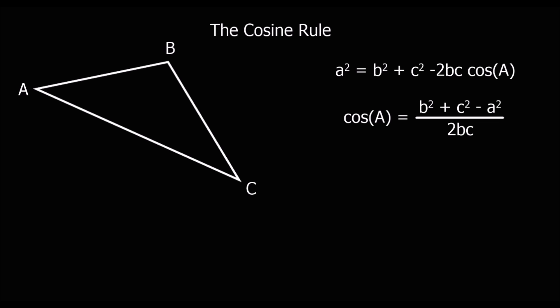We can't use the sine rule to find a missing length or a missing angle in a non-right angle triangle. We can often use the cosine rule.